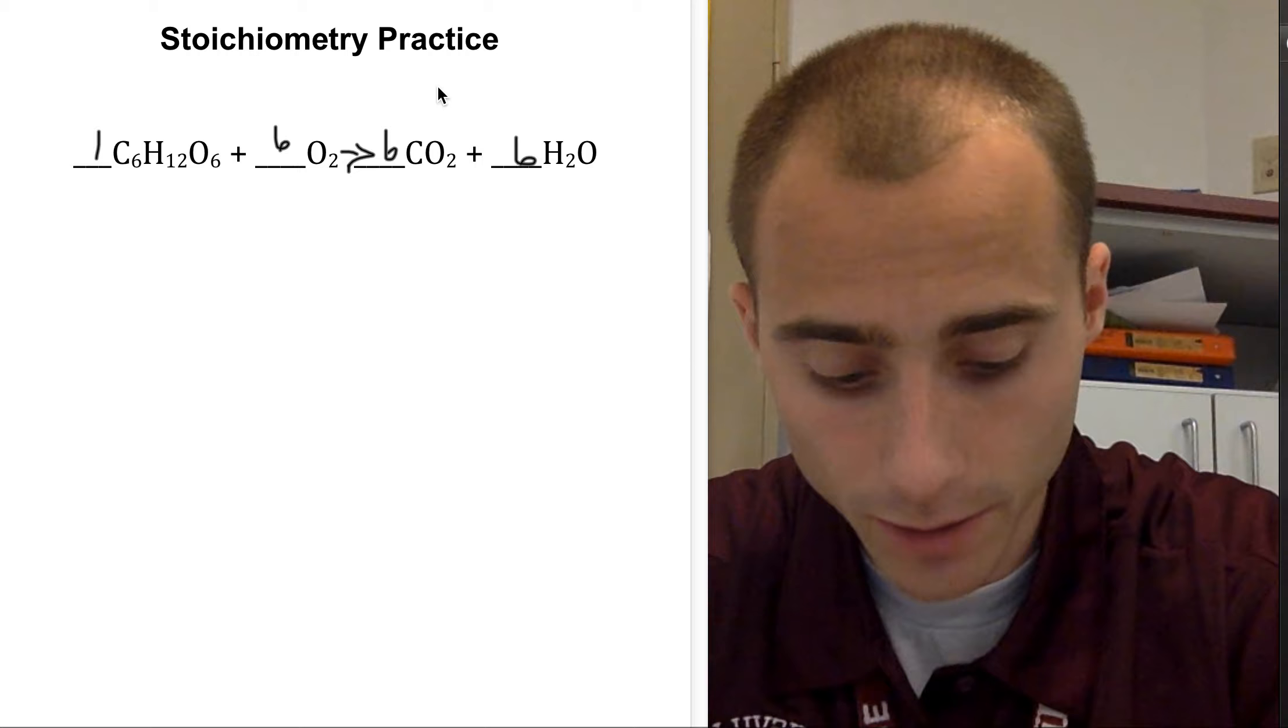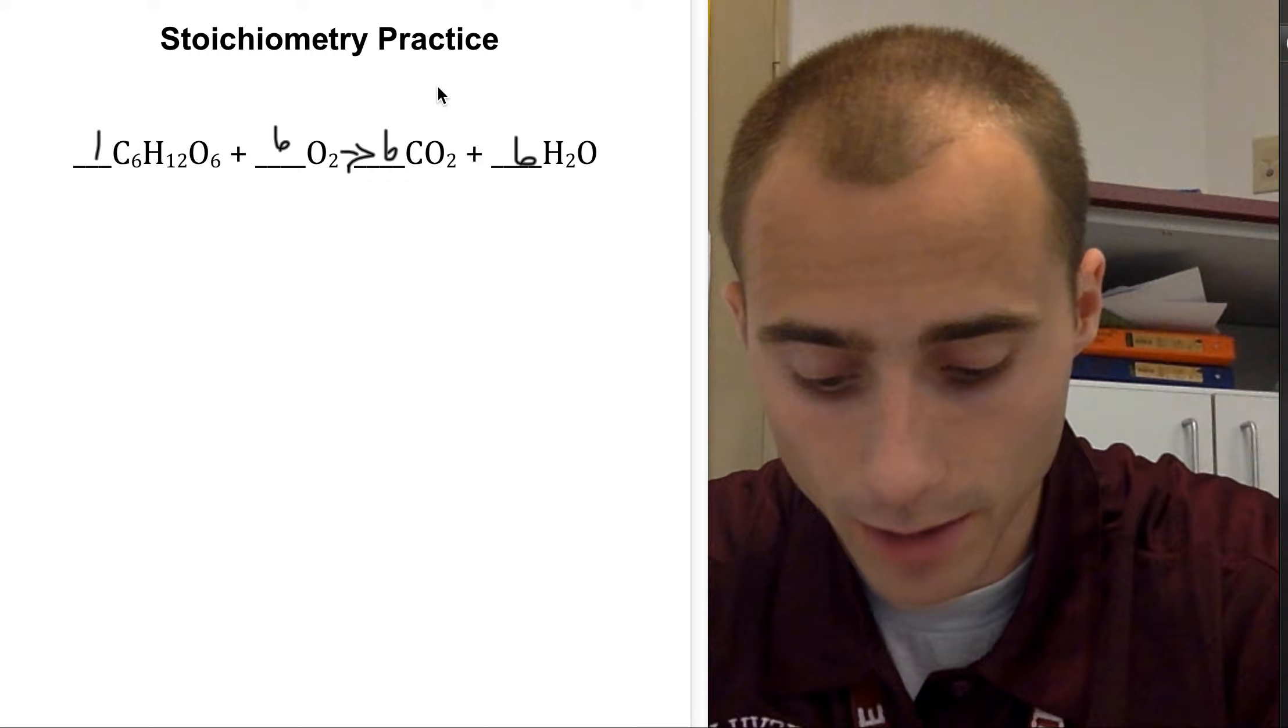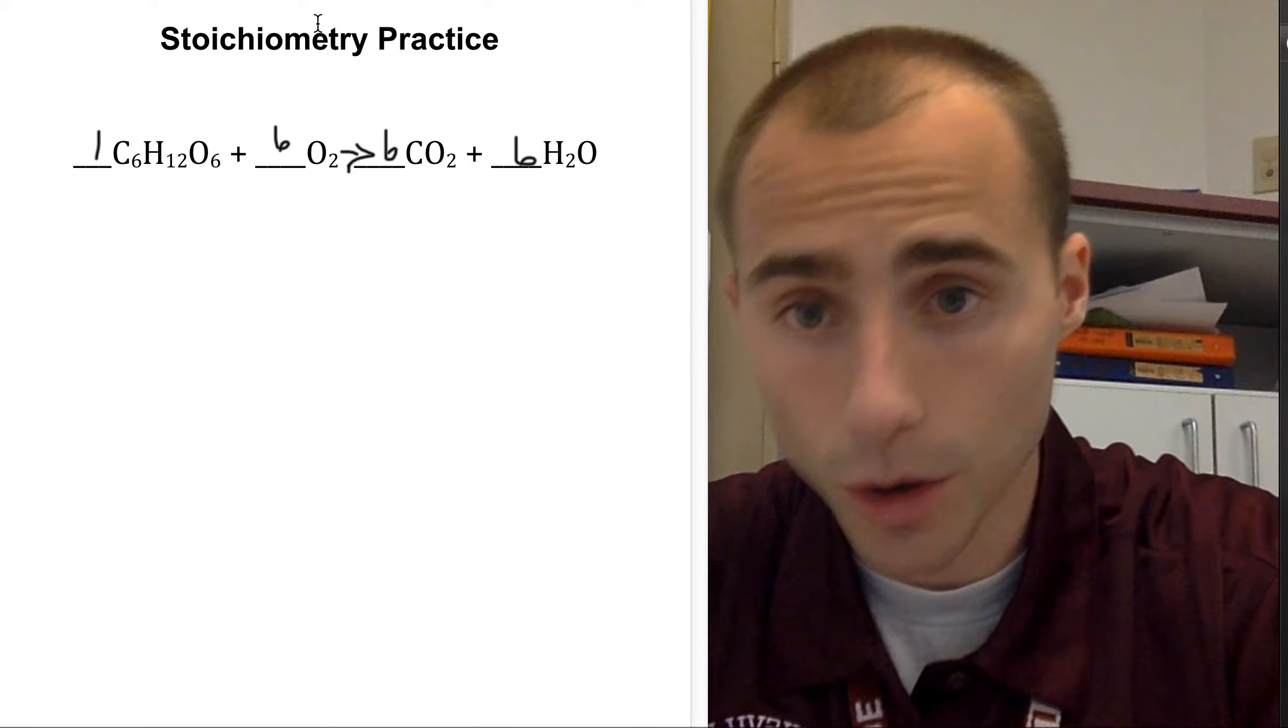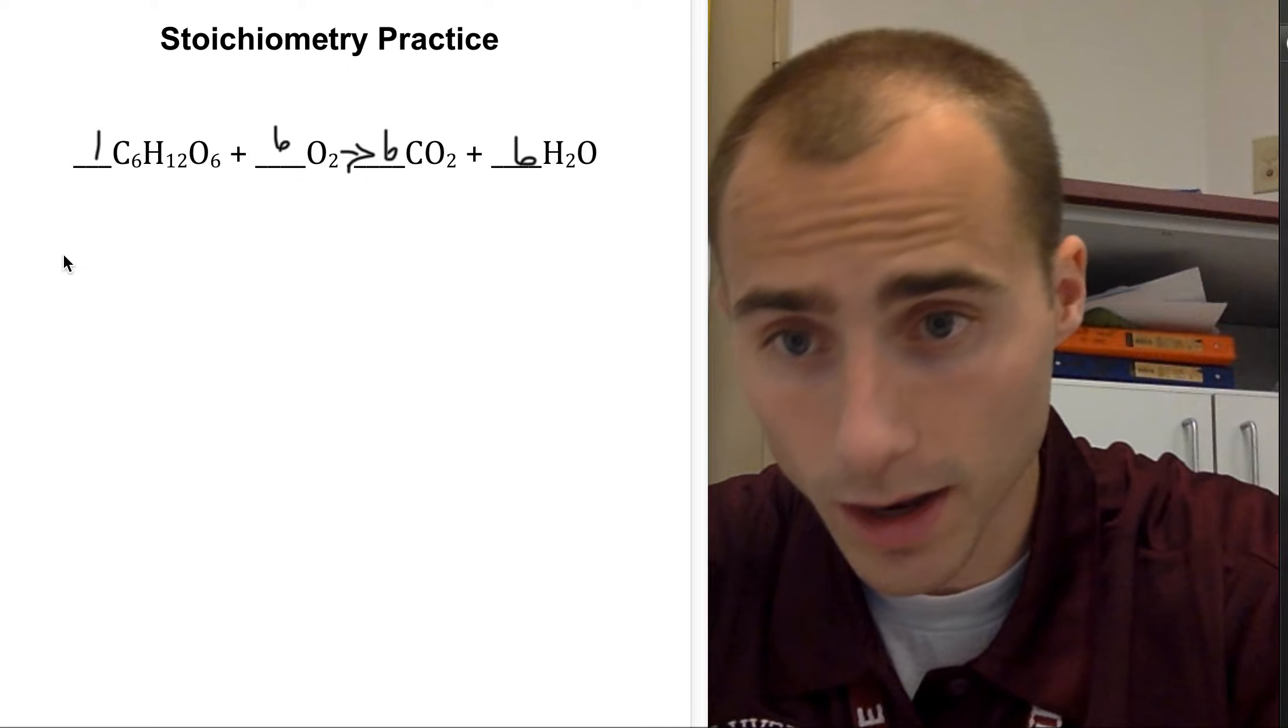Our next step is to identify the items of interest. It says calculate the number of grams of oxygen. So that's O2 right here. That's what we're looking at.